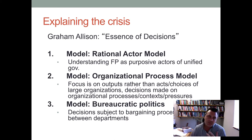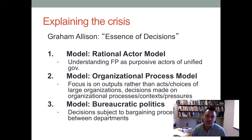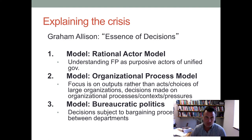The third model is bureaucratic politics, which gives a picture where policy is really subject to bargaining between departments. Rather than a unified government, you have all these different agencies who actually bargain and negotiate over what policy they ought to choose.